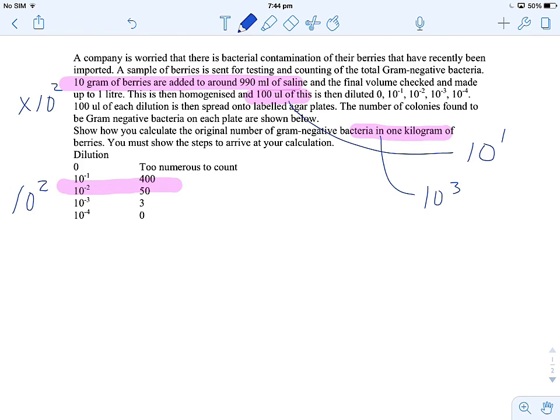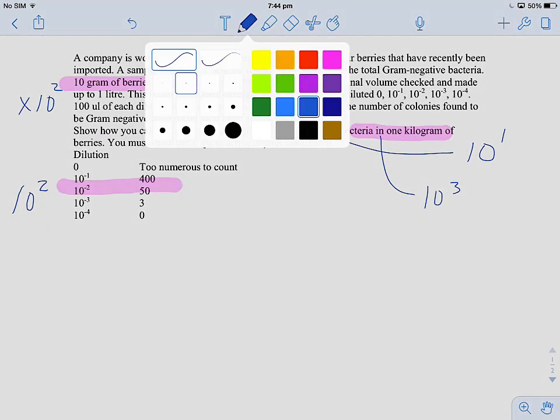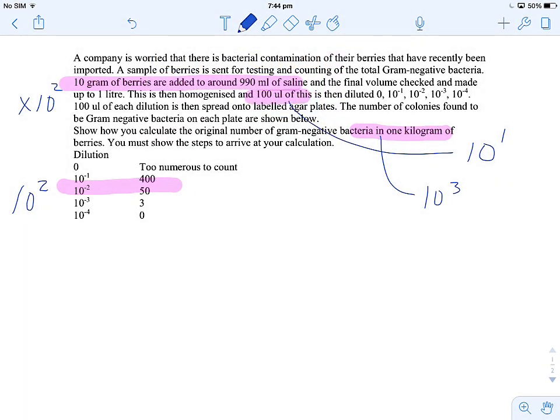So our final calculation is we've got 50 colonies growing on our 10 to the minus 2 dilution so 50 by let's put the 10 to the 2 from there. Let's put this 10 to the 2, 10 to the 2. Let's put this one and let's put that one.